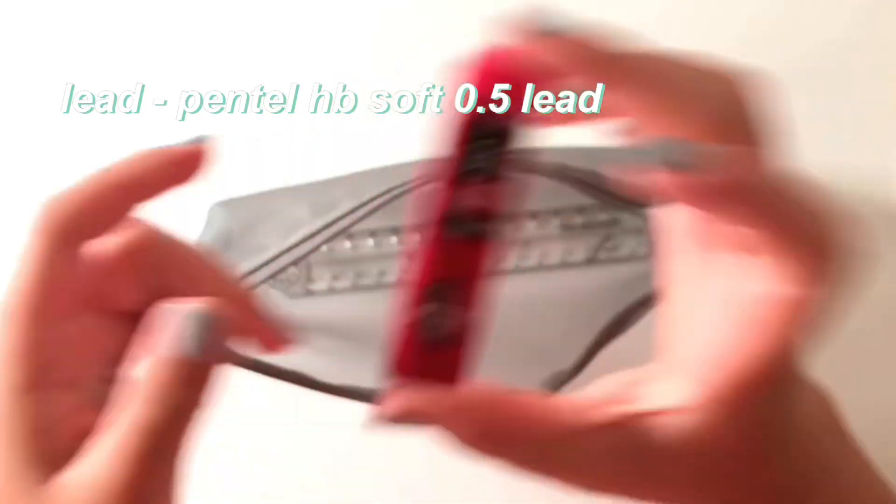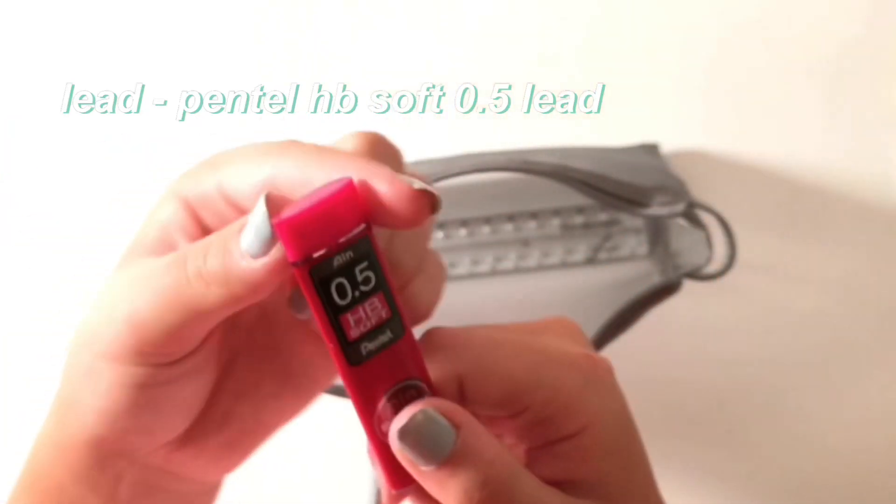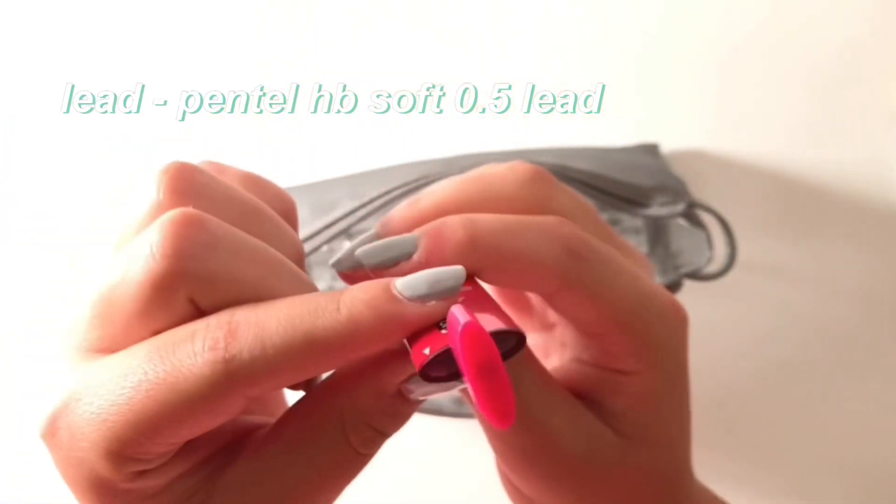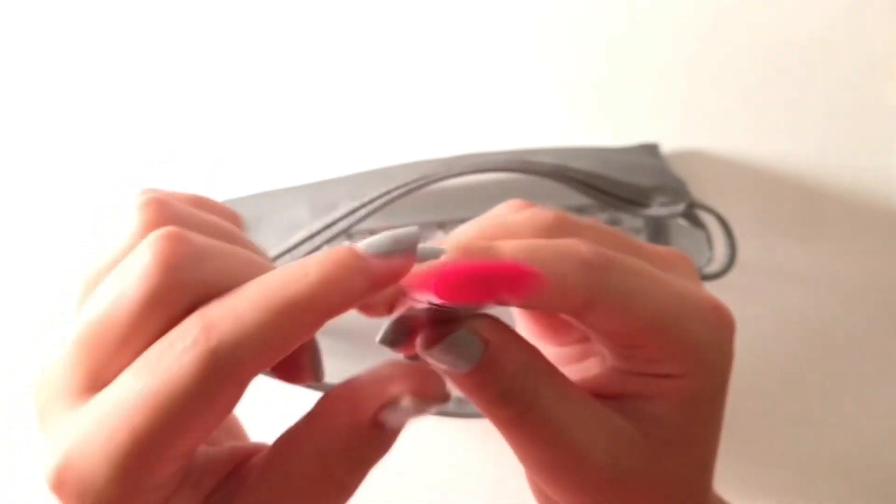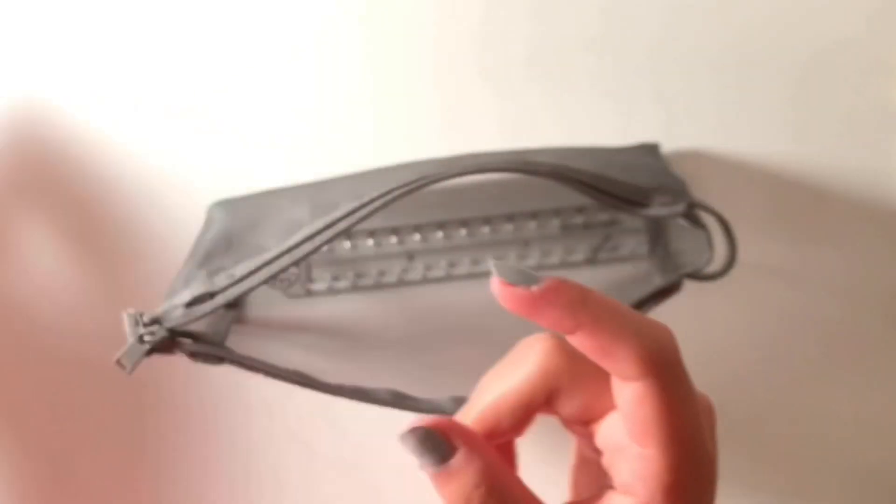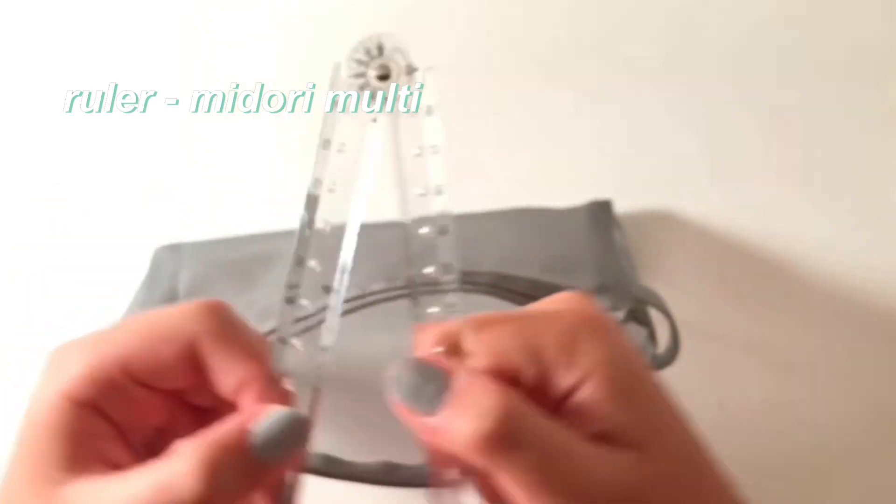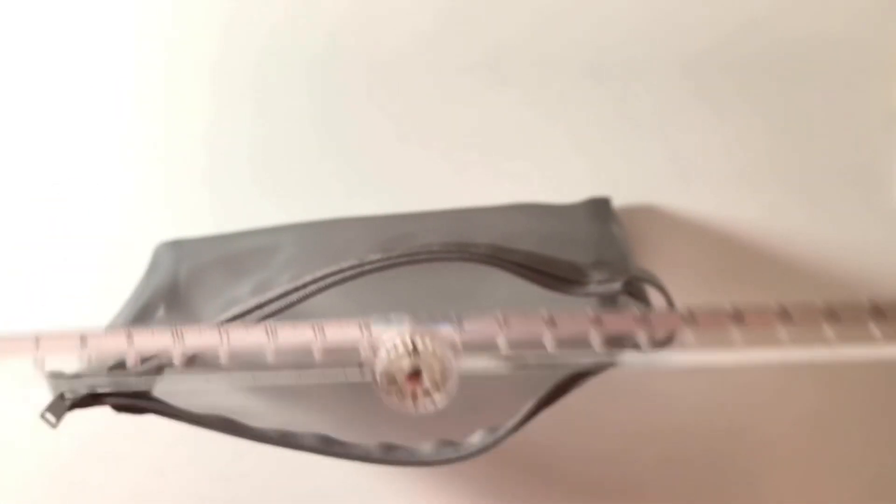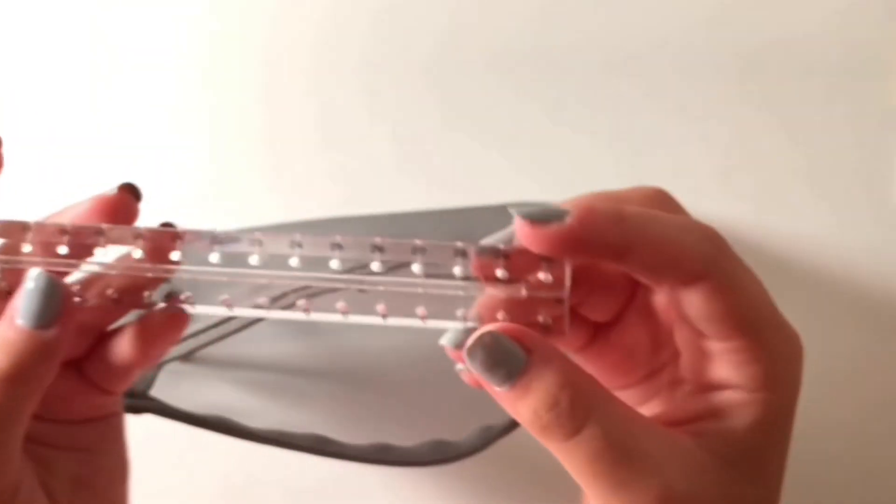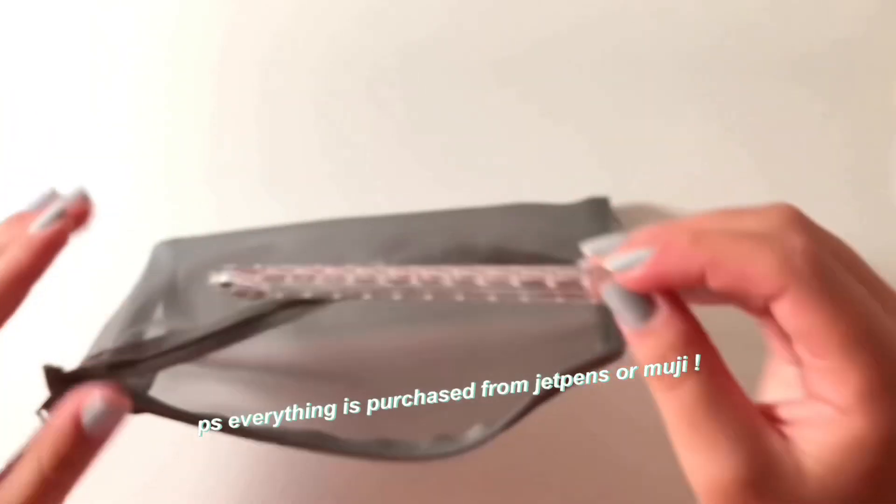And then this is the best lead in my opinion. This is the Pentel Ain Stein lead. It's really smooth and I highly recommend it. And then this is the Midori multi ruler. I use this to draw boxes on my notes and it just helps me be a little bit more precise when I'm drawing things.